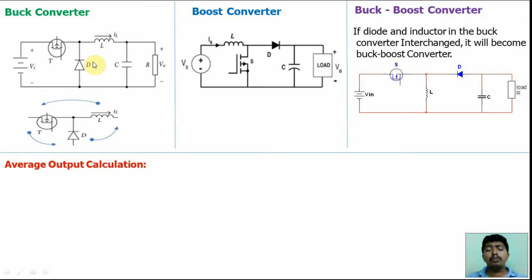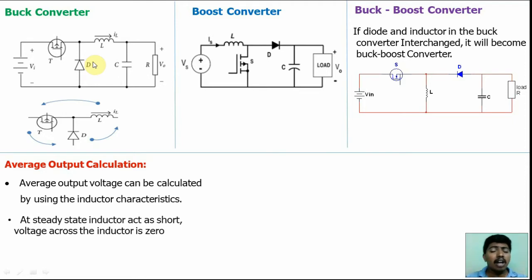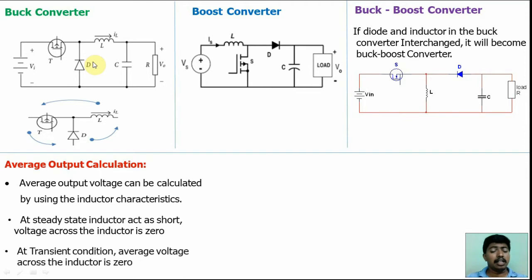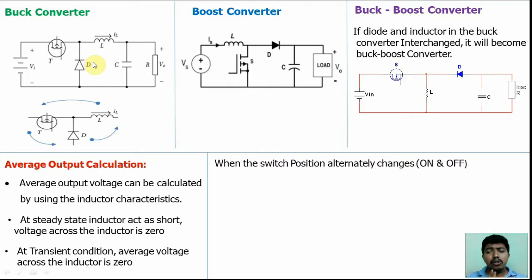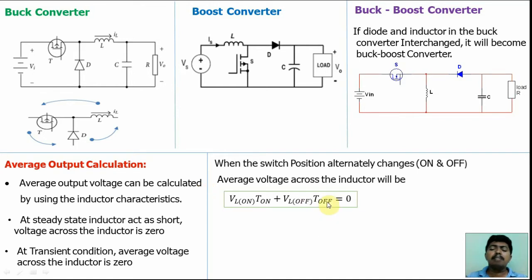Now we will discuss how to find the average output voltage calculations. The average output voltage can be derived using the inductor characteristics. The inductor under steady-state condition acts as a short, because after a long time with the switch on, the inductor acts as a short. So voltage across the inductor is zero. At transient condition, the switch changes alternatively from ON and OFF, so the average voltage across the inductor will become zero.